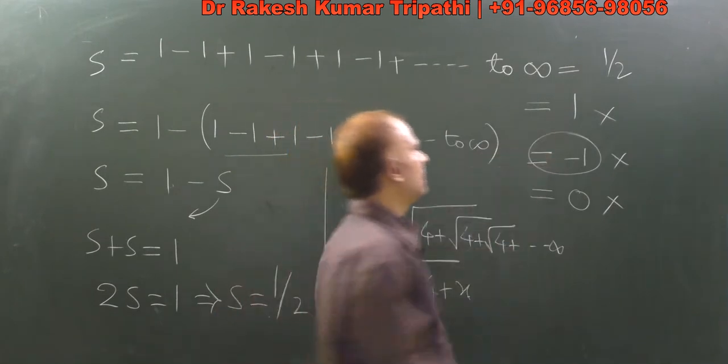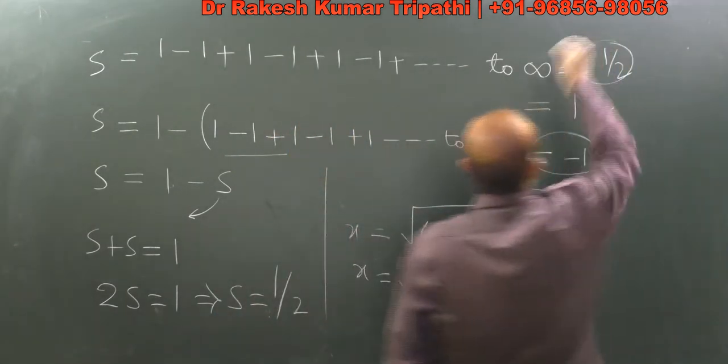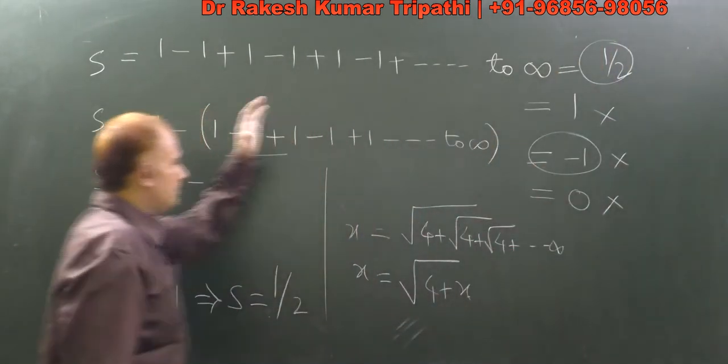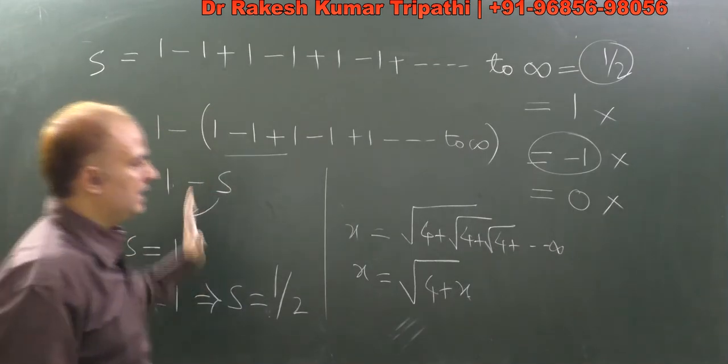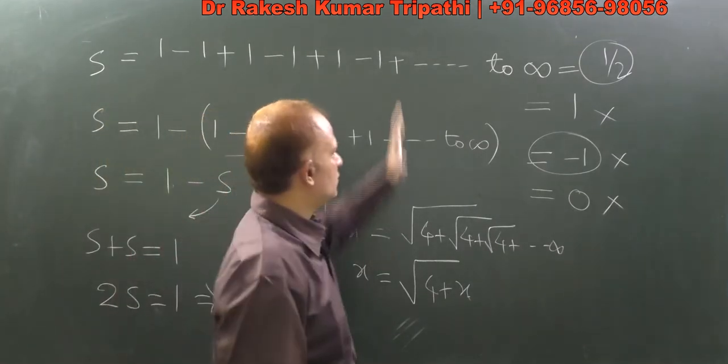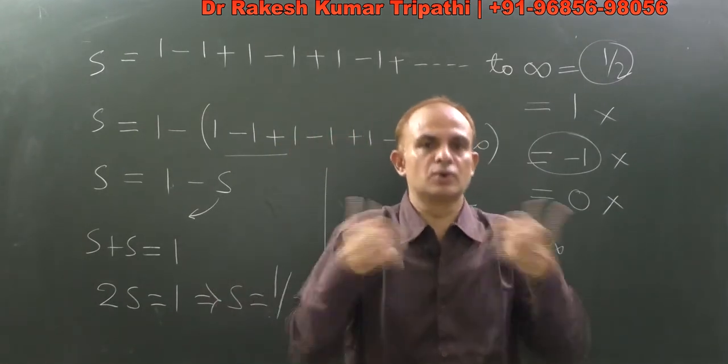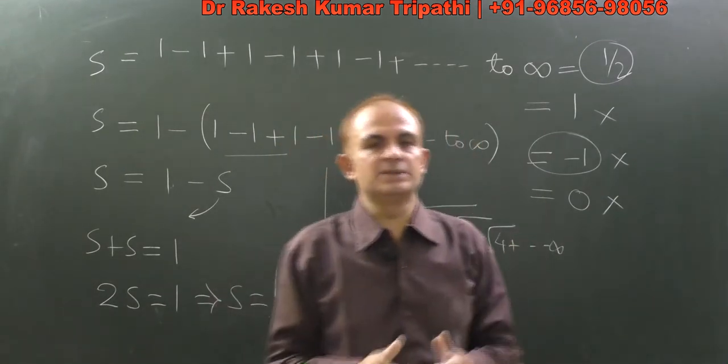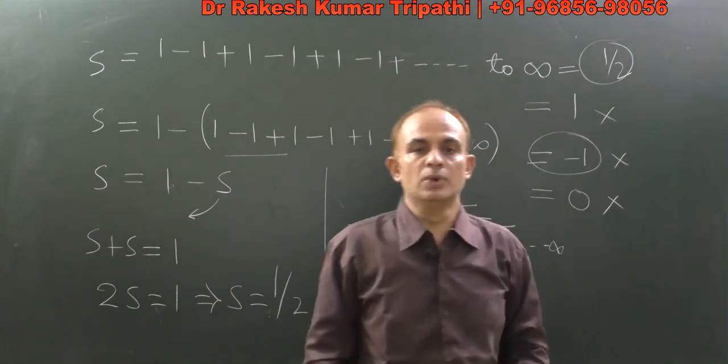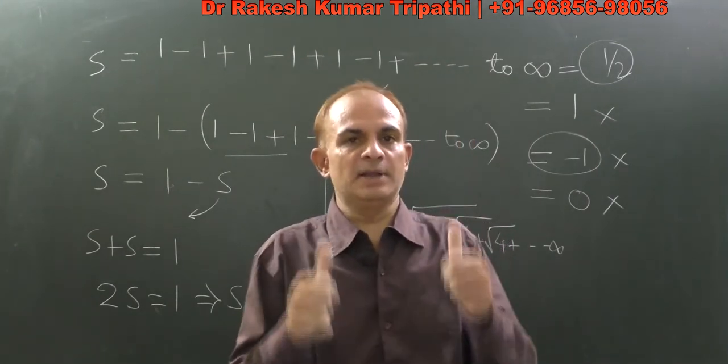is not correct. Why this sum is not correct, though the method is correct, and the method we have used to find its sum is absolutely correct looking. But why is this not 1/2? So do write your comments and let me know.